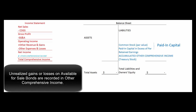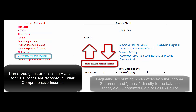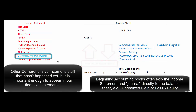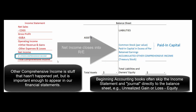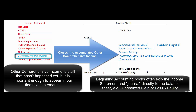If it's an available for sale security — we bought the bond and we'll sell it when we need the money or when the time is right — we're still going to put it on our books for its fair value, keeping track of the fair value adjustment in a separate account on the balance sheet. But we're not going to book that gain or loss in net income. Instead, there's an account called other comprehensive income — stuff that hasn't happened yet but is important enough to tell people about. And whereas net income closes into retained earnings, other comprehensive income closes into accumulated other comprehensive income.